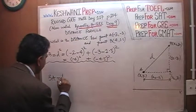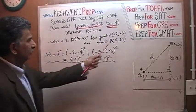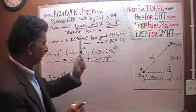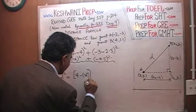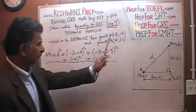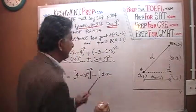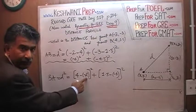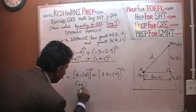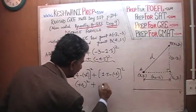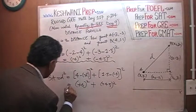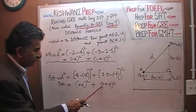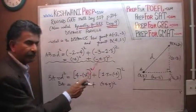Distance from B to A: D squared equals (x2 minus x1) squared plus (y2 minus y1) squared — that is, (4 minus negative 2) squared plus (1.5 minus negative 3) squared. That gives us positive 6 squared plus positive 4.5 squared. Positive 6 squared equals negative 6 squared, and positive 4.5 squared equals negative 4.5 squared, because negative times negative is positive.